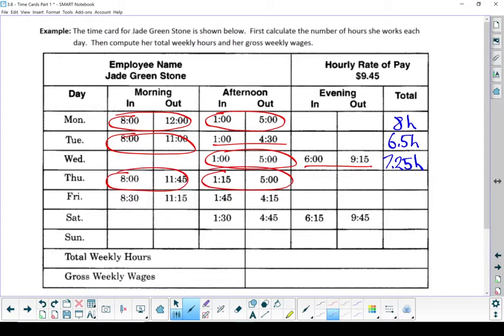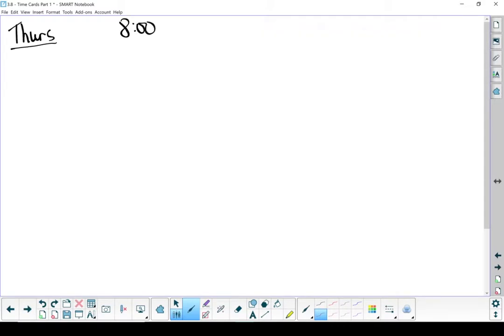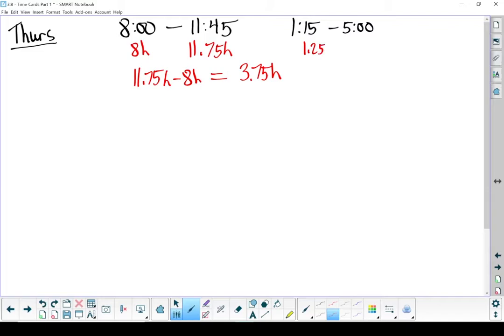Thursday. We've got those two pairs of time. Turn them into decimals. 8 hours and then 11:45, 45 minutes is three quarters of an hour, so 11.75 hours. Do our subtracting. In that morning shift, Jade worked 3.75 hours. On to the afternoon. 1:15 is 1.25 hours, 5 hours. Let's subtract them. In her afternoon shift, she also worked 3.75 hours. Add those together to get the grand total of 7.5 hours. Let's put that in the chart.